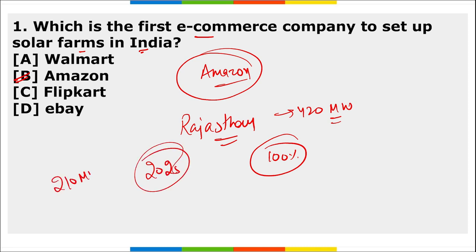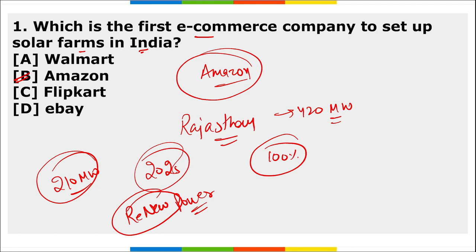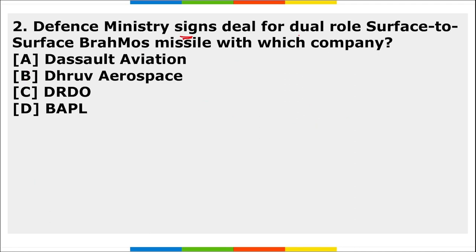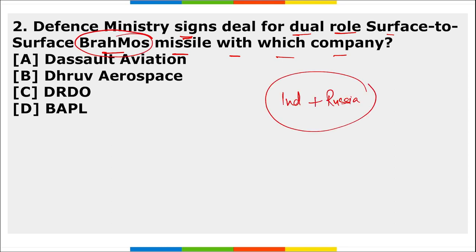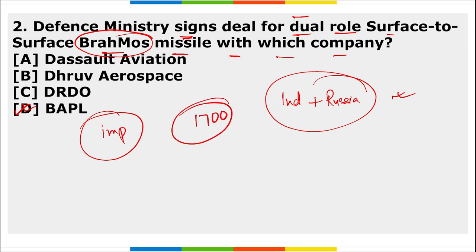Amazon aims to use 100% renewable energy across its business by 2025; the Indian project includes a 210 MW project developed by ReNew Power. The Defense Minister signed a deal for the dual-role surface-to-surface BrahMos missile with BAPL - BrahMos Aerospace Private Limited. BrahMos is a joint venture between India and Russia. The BrahMos missile will be acquired at ₹1,700 crore under the Indian category.